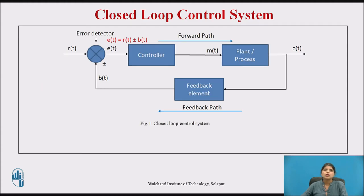A closed loop system is a system in which the controlling action is somehow dependent on the changes in the output. You can observe this in the block diagram of the closed loop system.